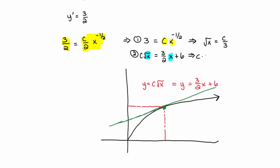instead of the square root of x, I'll call it c over 3, must equal 3 halves times x, which is actually the square root of x squared. So, that's going to be a c squared over 9 plus 6.